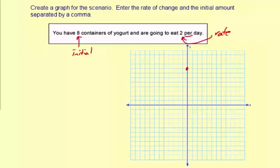So two per day, that means that day one we're eating two yogurts we're going to go down two. And then day two, we're going to eat two more. Day three, eat two more. Day four, down to zero yogurts. So here's the pattern for the yogurts.